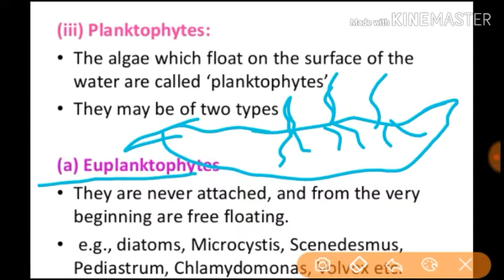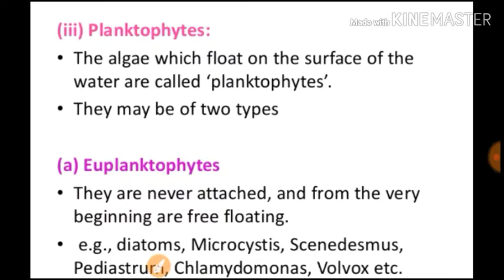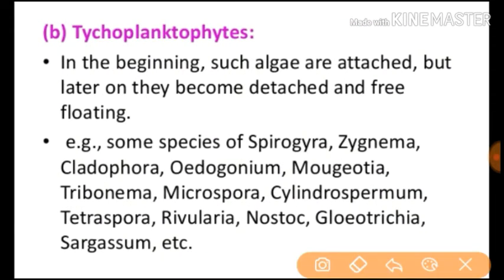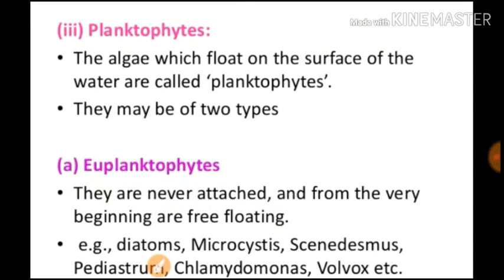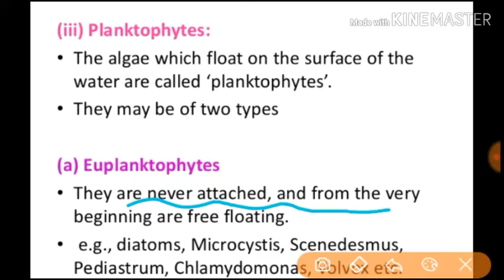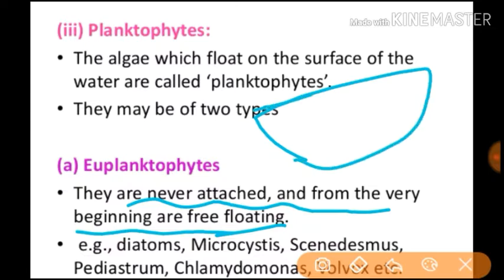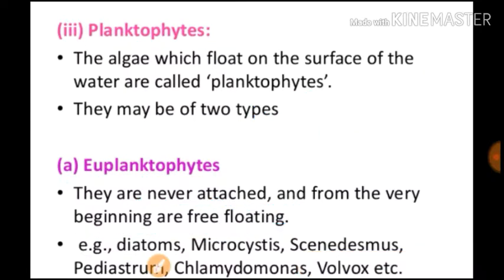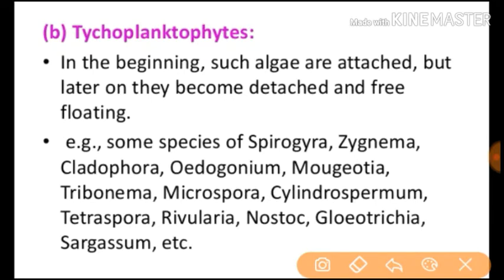The first type is euplanktophytes. These are never attached and from the very beginning are completely free-floating — their roots do not attach to the ground at all. They are free-floating plants. Examples include diatoms, Microcystis, Volvox, Closterium, and others.